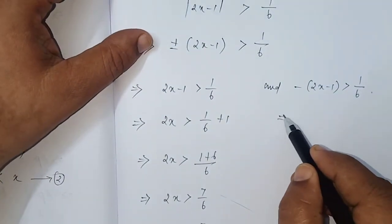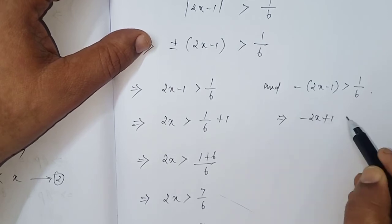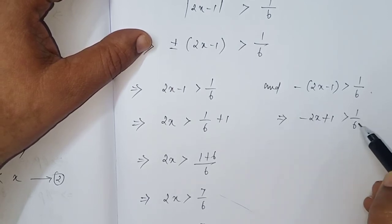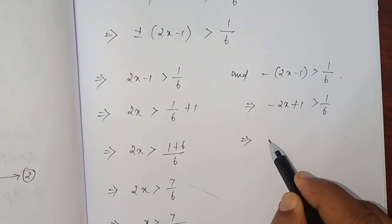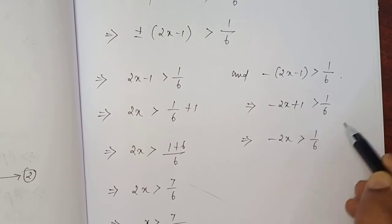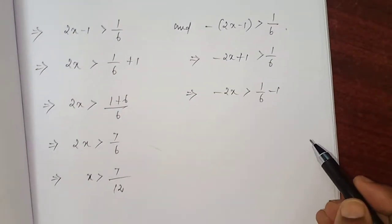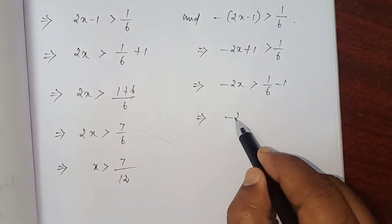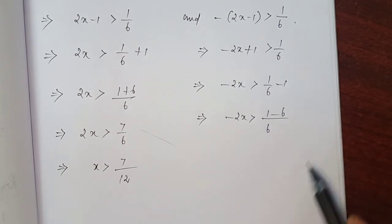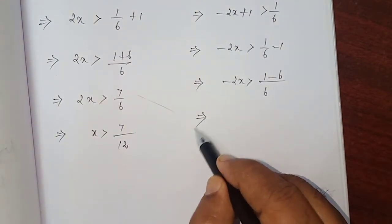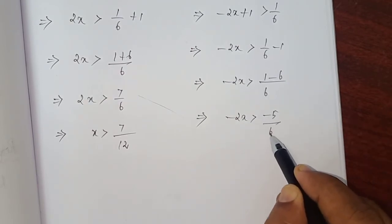Here which implies minus 2x, minus into minus plus 1 which is greater than 1 by 6. Then, minus 2x which is greater than 1 by 6 plus 1 comes right hand side minus 1. Minus 2x which is greater than 6. Minus 2x which is greater than 1 minus 6, that is minus 5 divided by 6.